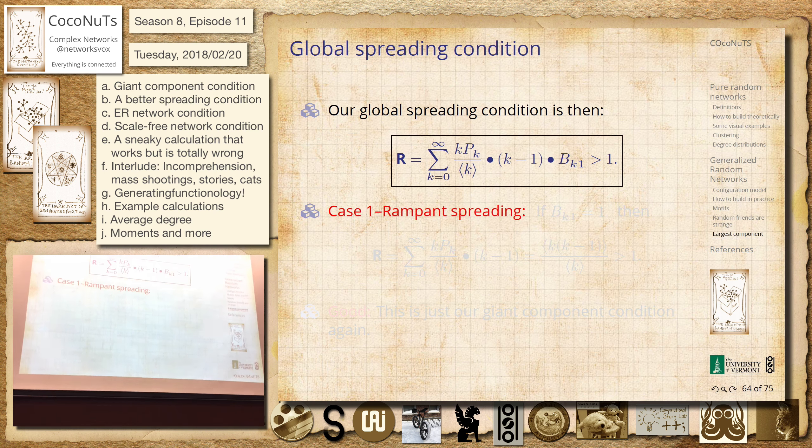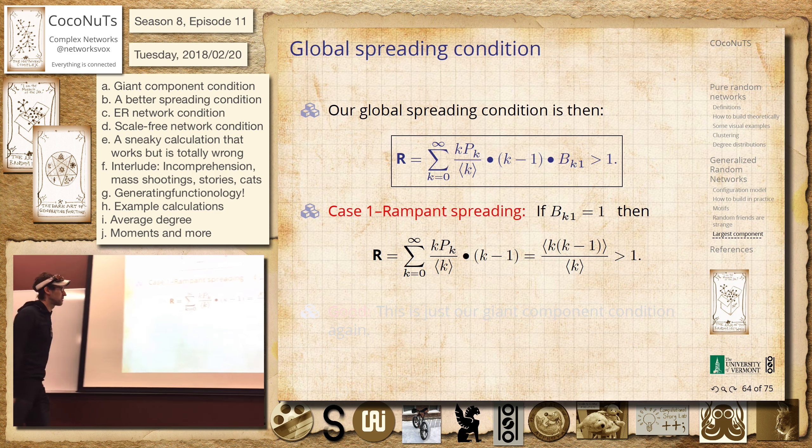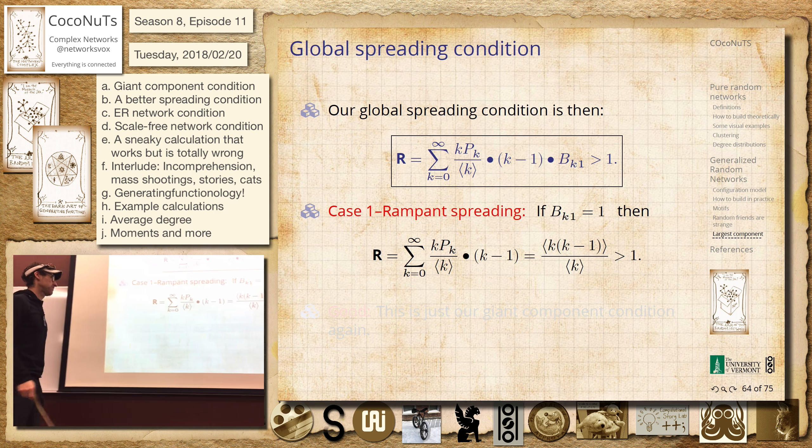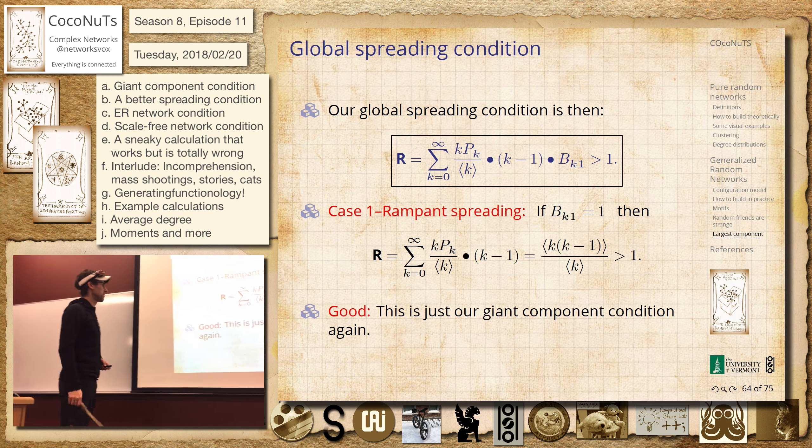Rampant spreading would be everyone just gets hit, and this is actually just the condition for a giant component — because we're not even thinking about a real spreading mechanism anymore. If you drip an infectious agent somewhere in the network and it permeates everywhere like a liquid, and you do that over and over again and see if you have a giant component. So this all collapses: we have a one here and get back to the giant component condition. This was a slight generalization to have an infection probability in there — second moment minus the first moment divided by the first moment.